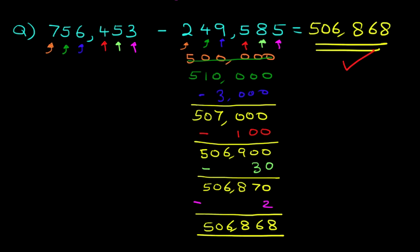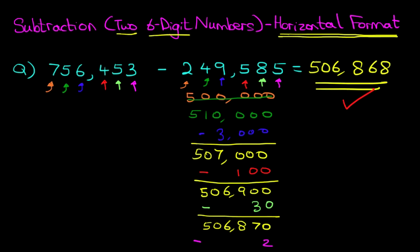For that, we get a nice big tick. And basically, this method is what you would use if you see these numbers and you have to do mental arithmetic. Now, practice these because it will shorten the time for you to do these and you'll have more time to work on other problems. So that is how we do subtraction of two six-digit numbers using the horizontal format.